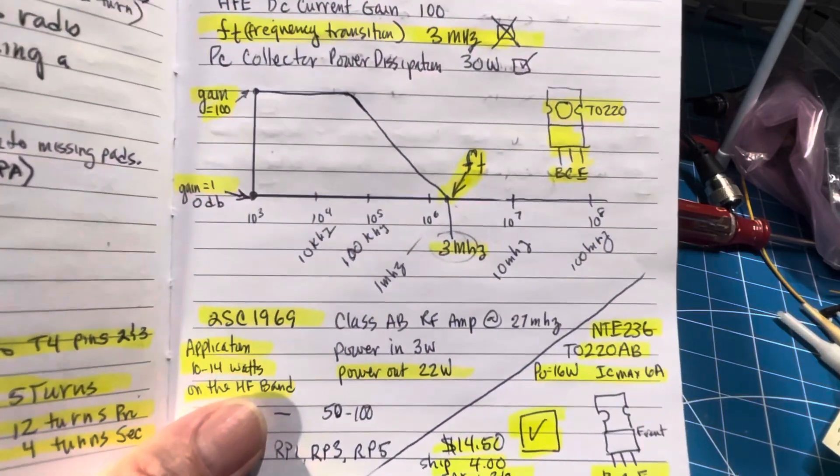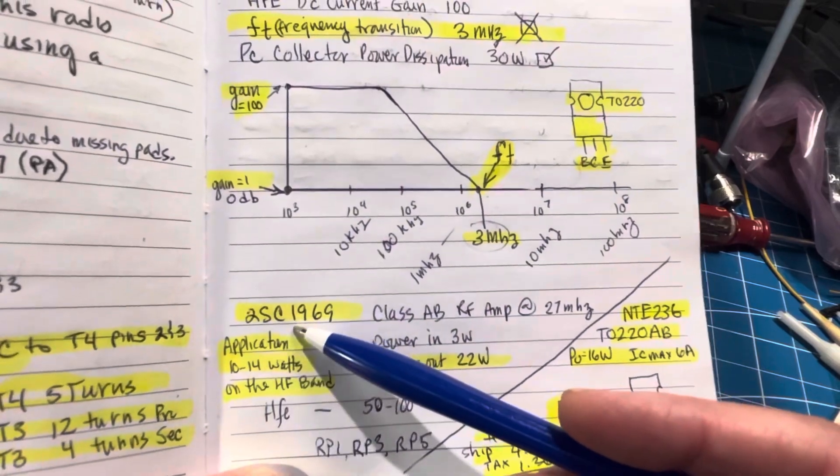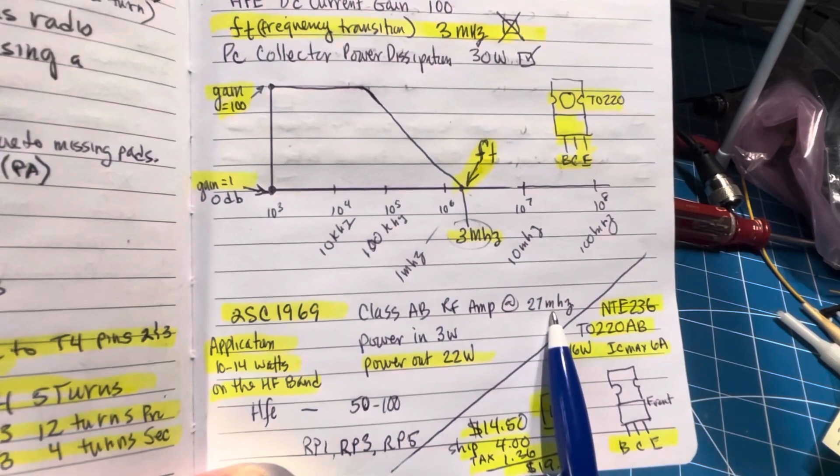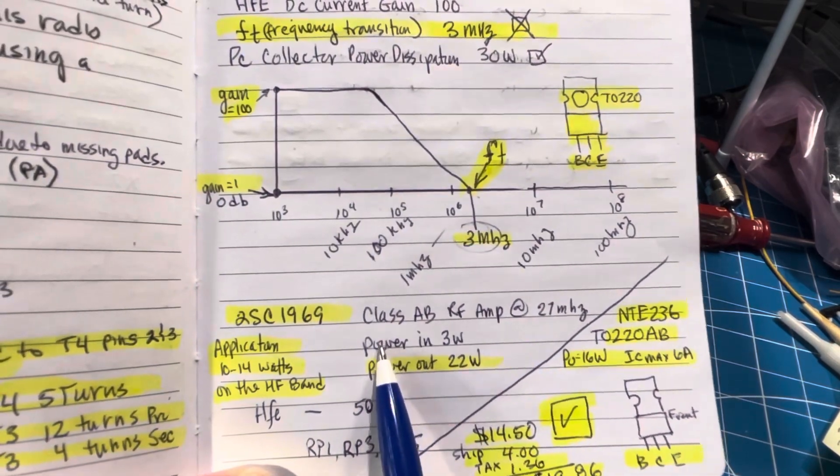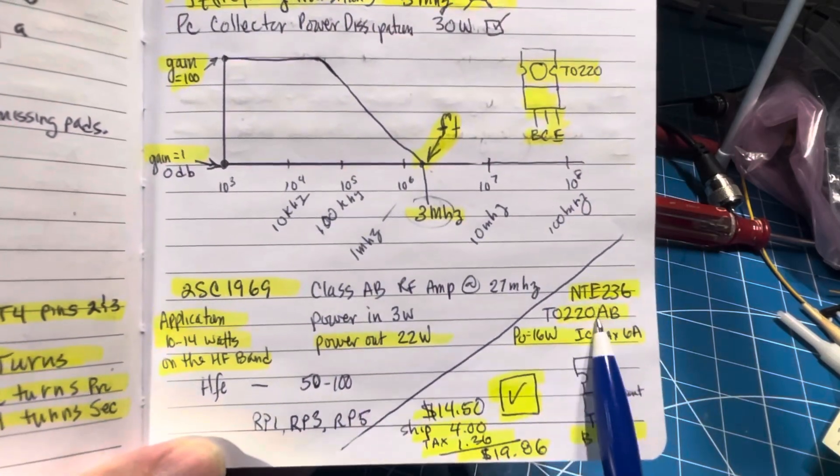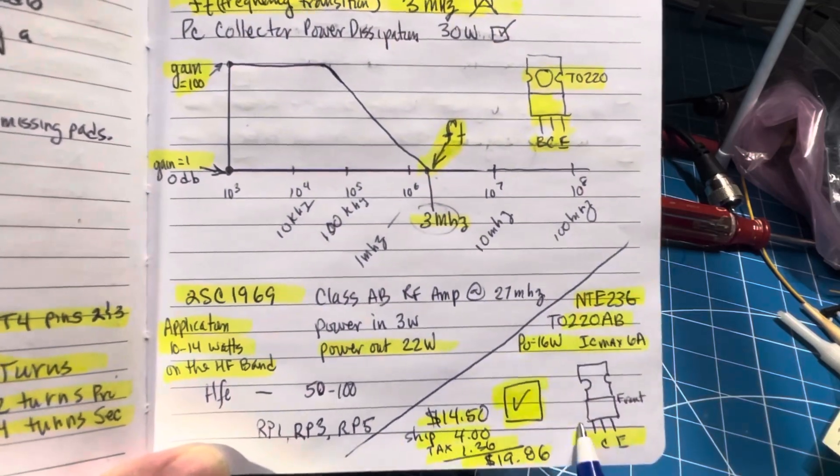And to keep you up to date on how that worked, the original transistor should be a 2SC1969, which is a class AB RF amp at 27 MHz, with a power in of 3 watts and a power out of 22, and the NTE 236 is the same TO 222, so base collector emitter, so we pass there.